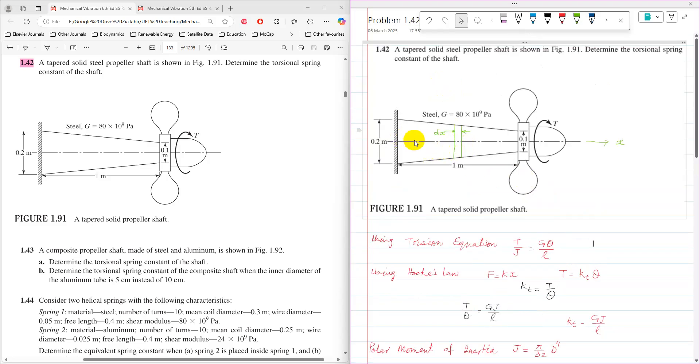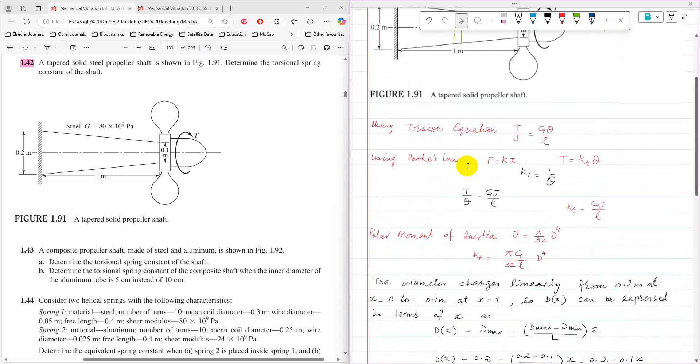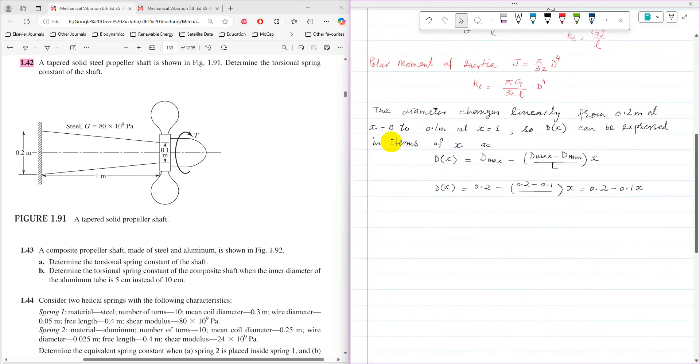That is a function of X, and it can be, diameter can be written as a function of X by using the fact the diameter changes linearly from 0.2 at X equals 0 to 0.1 at X equals 1.